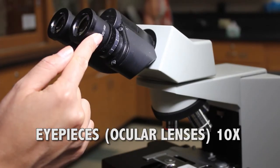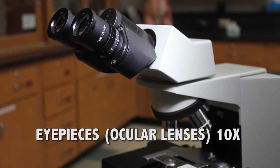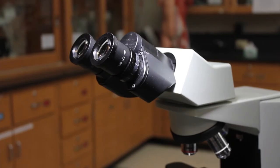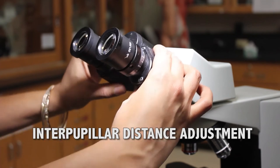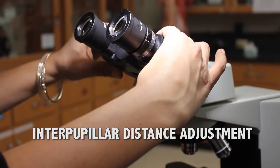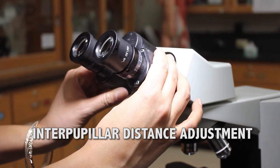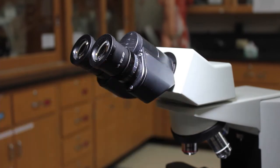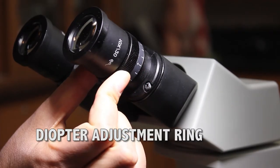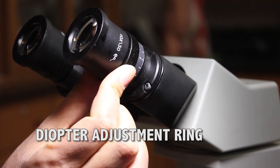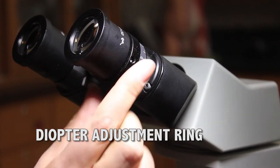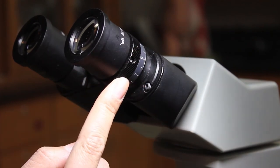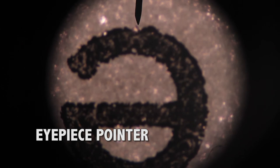Eyepiece or ocular lenses are 10x magnification. Interpupillary distance adjustment adjusts the distances between the two ocular lenses. Diopter adjustment ring will compensate for differences between the eye focal lengths. One of the eyepieces has a pointer.